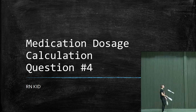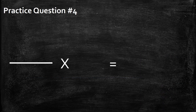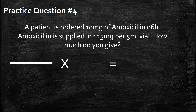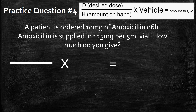Medication dosage calculation number four. Let's take a look at the question. A patient has ordered 10 milligrams of amoxicillin Q6H. Amoxicillin is supplied in 125 milligrams per 5 milliliter vials. How much do you give?